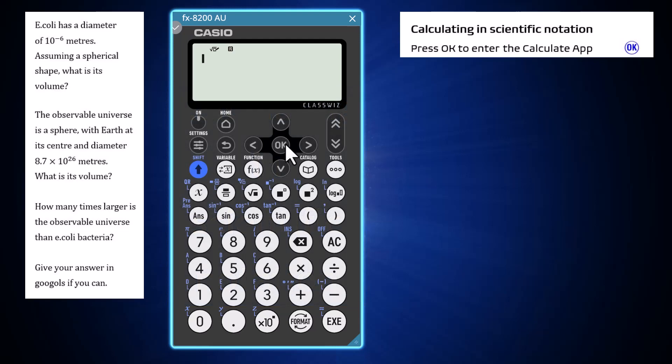This is especially handy when calculating very small quantities like the approximate volume of E. coli bacteria in cubic metres or very large quantities like the volume of the observable universe.